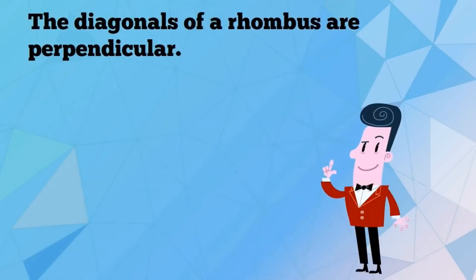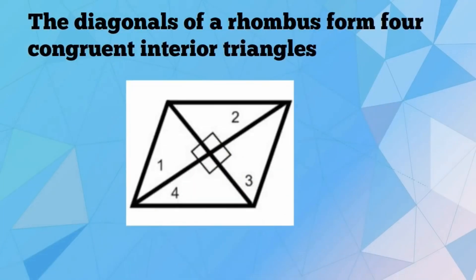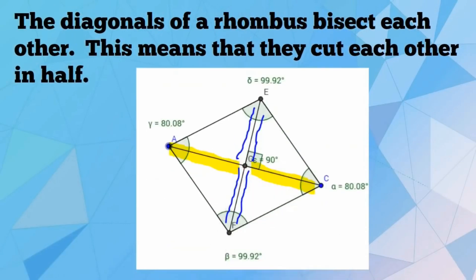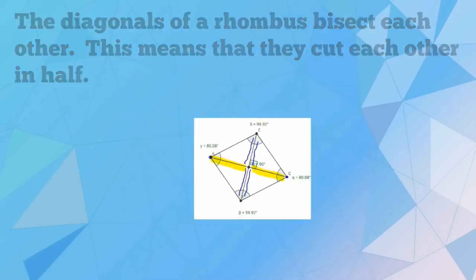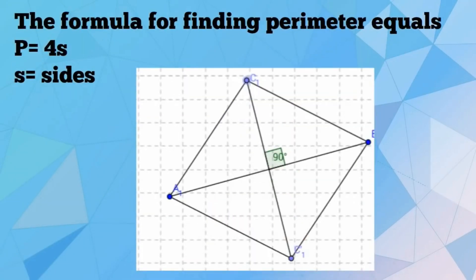The diagonals of a rhombus are perpendicular. The diagonals of a rhombus form four congruent interior triangles. The diagonals of a rhombus bisect each other — this means that they cut each other in half. The formula for finding the perimeter of a rhombus equals P equals 4S, where S equals the side length.